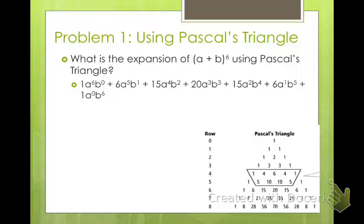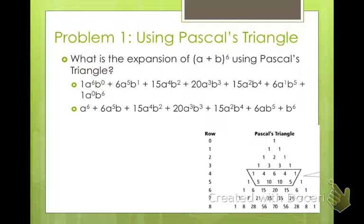Then you simplify: b to the 0 is always 1, and we drop coefficient 1s, giving us a to the 6th plus 6a to the 5th b plus 15a to the 4th b squared plus 20a cubed b cubed plus 15a squared b to the 4th plus 6a b to the 5th plus b to the 6th. That is a plus b to the 6th expanded all the way out.